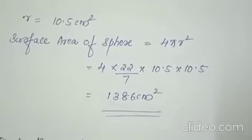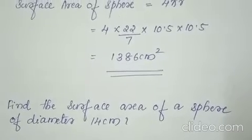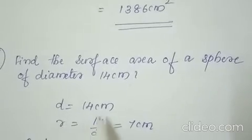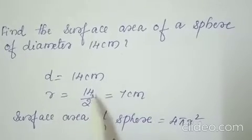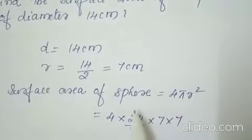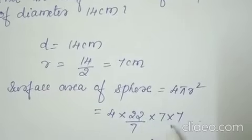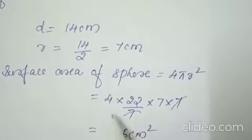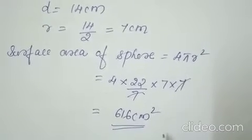The second question: find the surface area of a sphere of diameter 14 cm. Here they have given diameter, so diameter D equals 14. If diameter is given, we have to find the radius first: 14 divided by 2, that is 7 cm. Then the surface area of the sphere equals 4 pi r square. So 4 into 22 by 7 into 7 into 7 — cut this 7 with that 7 and multiply all these numbers. You will get the answer 616 cm square.